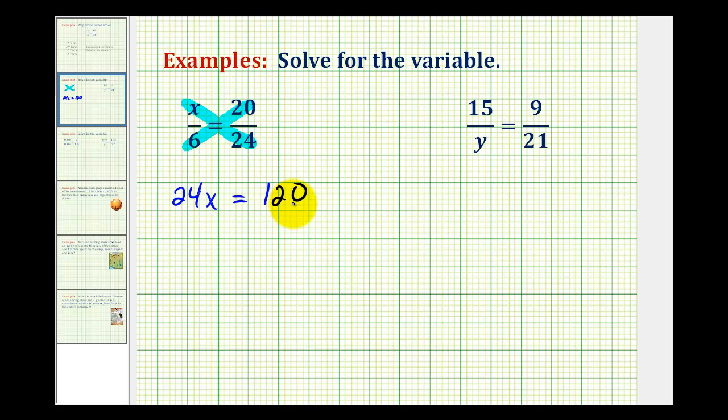Now we have a one-step equation to solve. We can solve this equation for x by dividing both sides by 24. So we have x on the left side, and 120 divided by 24 is equal to 5, so we have x equals 5.